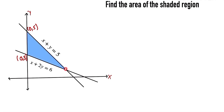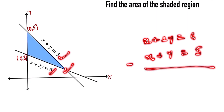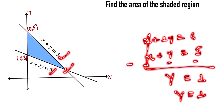Now we need to find this intersection point. Let's solve both equations: x plus y is equal to 5, and x plus 2y is equal to 6. We subtract the first from the second, changing the signs — x and x cancel out — so the value of y is equal to 1.